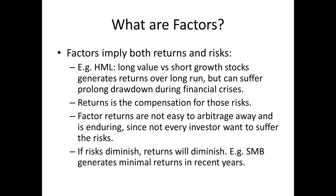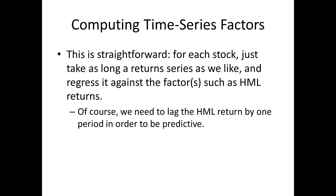The factor can go away, but it usually goes away because the risk has diminished. If the risk is alive and healthy, you can enjoy the factor return forever in theory. Now that we know the rationale for trading factor models, let's discuss how we compute them. There are two kinds of factors: cross-sectional factors which depend on each stock, and time series factors which depend on time but not on the stock.